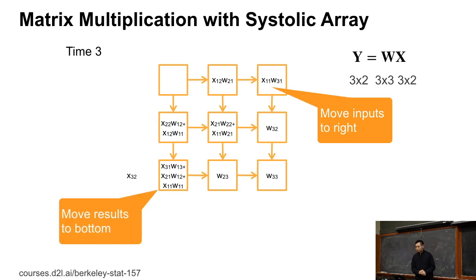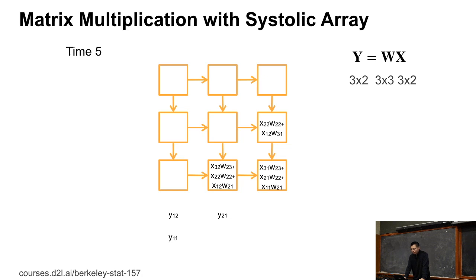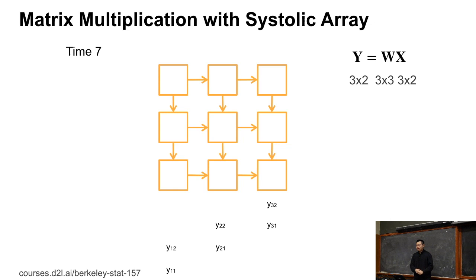We continue: at the next step, we further move inputs left and results down. X11 is now at the third column, and X11×W11 from time 1 is now on the third row. We continue moving inputs left and results down. Eventually, the accumulated result at the bottom-left PE equals Y11. Doing this repeatedly for all time steps, after 7 total steps, we get all elements of Y.